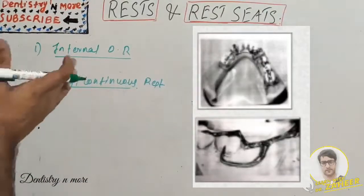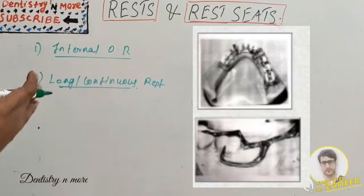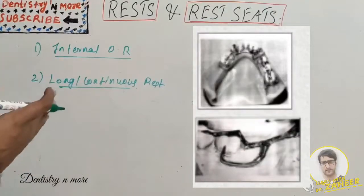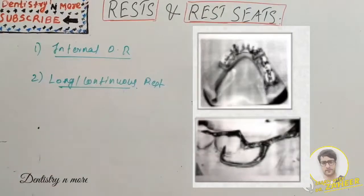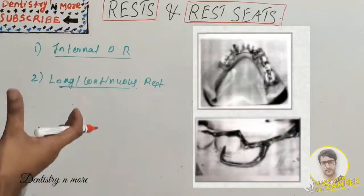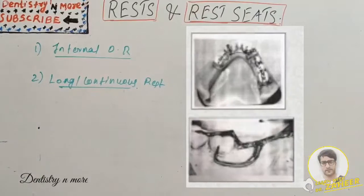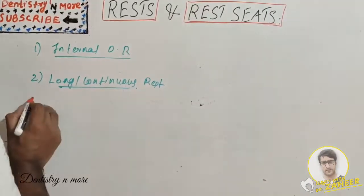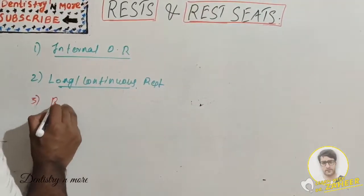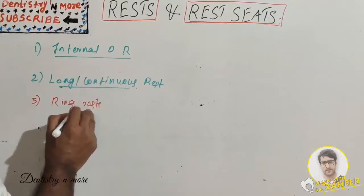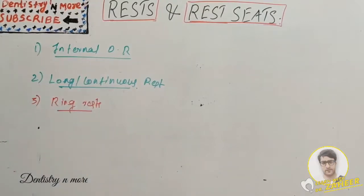The second type is the long or continuous rest. The rest is designed to extend entirely across the occlusal surface of two or more teeth, and in some instances across the entire arch. When an occlusal force is delivered in one area, all remaining teeth act in unison to provide support through the single framework. This type of rest can restore the occlusal plane, provide support, and splint the arch.